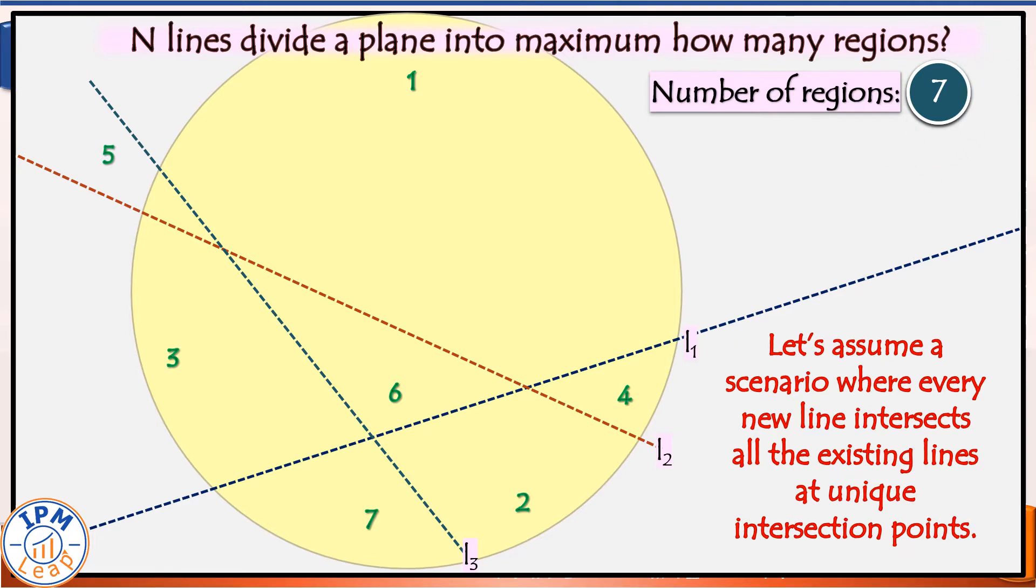Now, when we draw the fourth line, and assuming it intersects the previous three lines at unique points, see carefully,